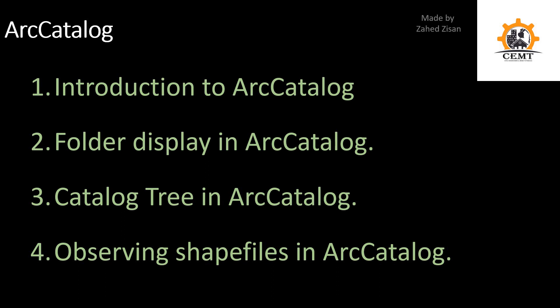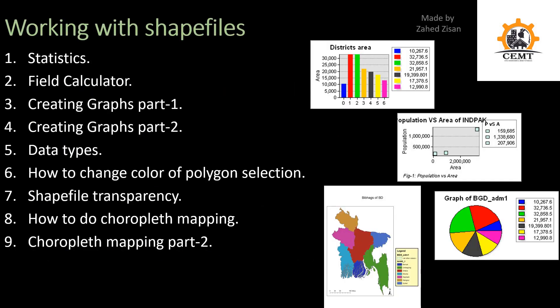The next section is on Arc Catalog. ArcGIS actually consists of four softwares: ArcMap, Arc Catalog, ArcGlobe, and ArcScene. In this section I'll introduce you to Arc Catalog, show how folder display types work in the catalog tree, and how much of your shapefile data you can view and change through Arc Catalog.